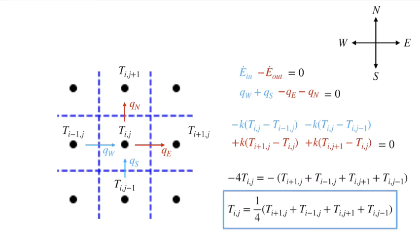Or, dividing by the minus 4, the temperature that we're looking for, Tij, is equal to the average of these four temperatures that we use to approximate the temperature gradients there. That makes it very, very easy to solve.